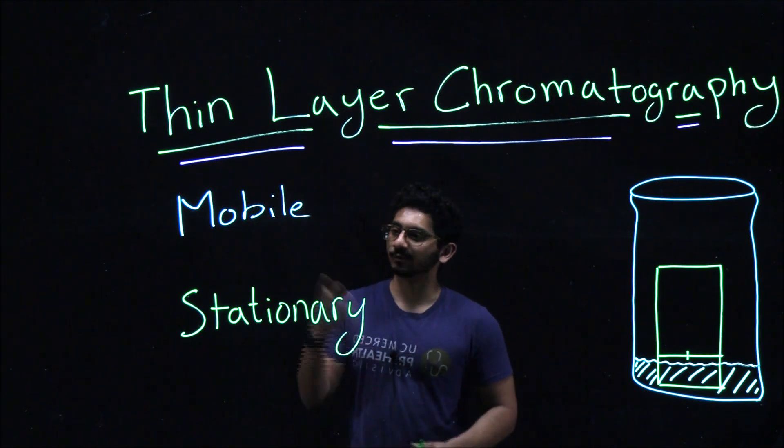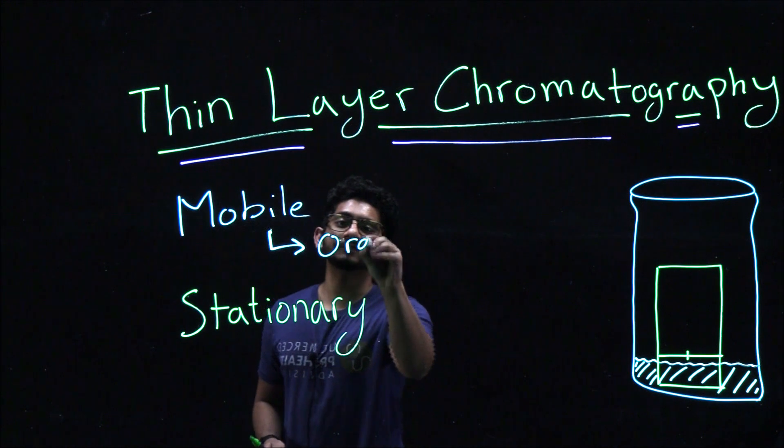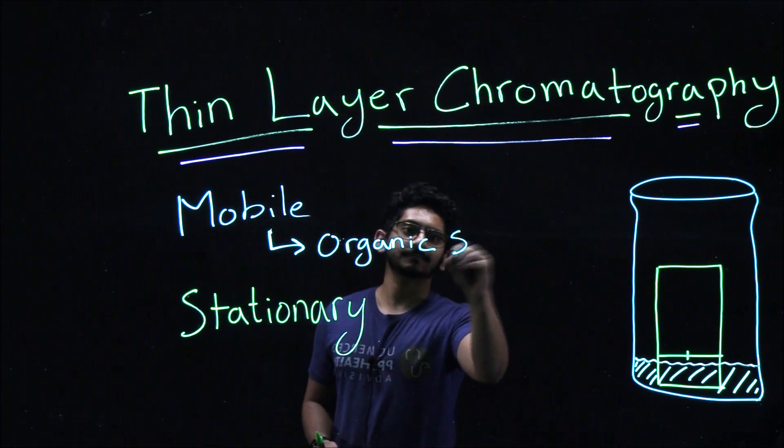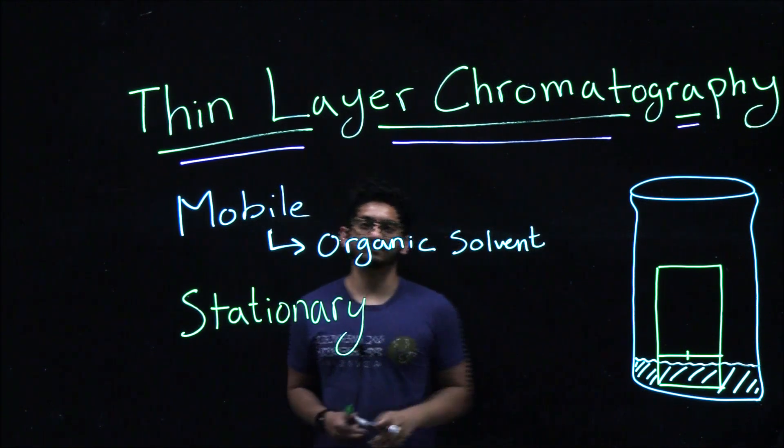In thin layer chromatography, we have two phases. We have the mobile phase, which in your case is going to be an organic solvent, such as DCM, hexanes, or even ethyl acetate, or even a mixture of these.